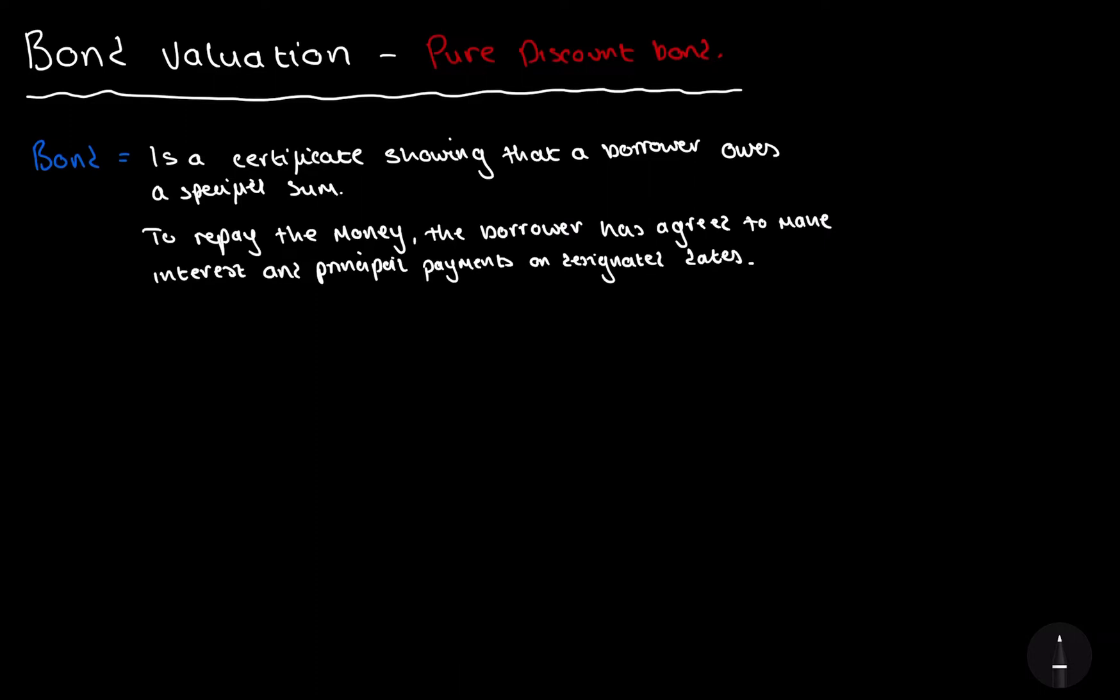So first of all, let's start off with what bond is. A bond is a certificate showing that a borrower owes a specified sum of money. This can come from the government, usually called treasury bonds, or it can be from companies, usually called corporate bonds.